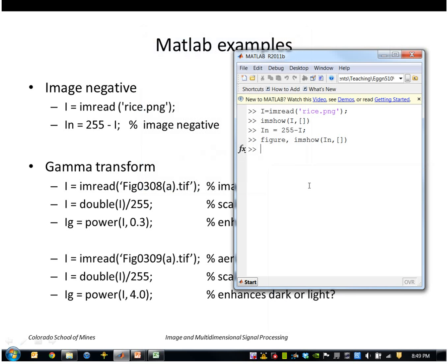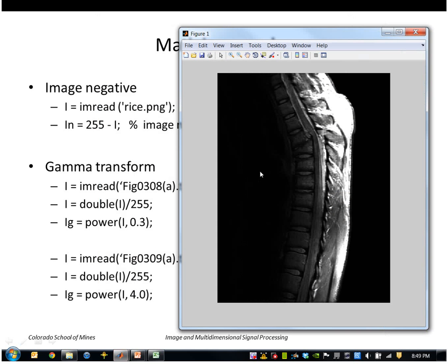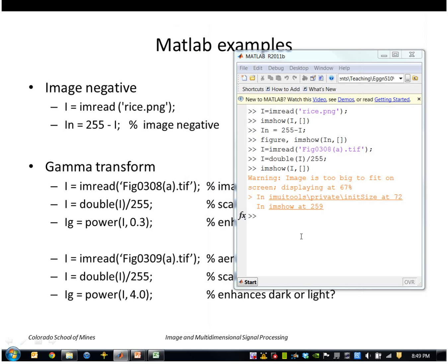Let's look at a gamma transform. I'll bring up this image. I'm going to work with double and scale everything to zero to one, and then raise it to the power gamma. For this image, I should display the image first. This particular image is rather dark. Perhaps we might want to enhance the values at this low range here, so I'll raise it to a power of gamma less than one. That should enhance the low values.